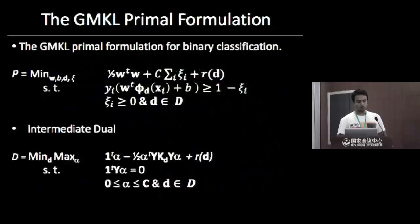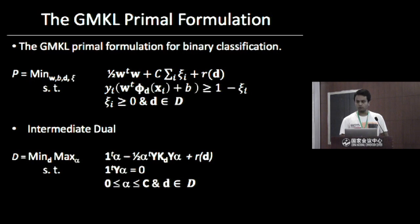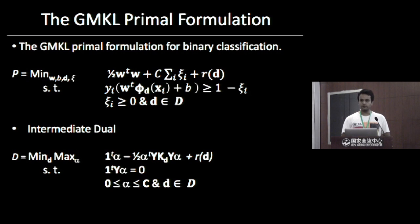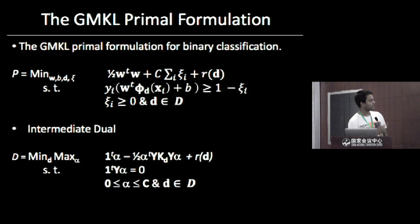The standard algorithm used to solve this is a wrapper-based algorithm with two loops. In the outer loop, we perform optimization over the kernel weights keeping the dual variables fixed. In the inner loop, we keep the kernel weights fixed, and once fixed, we can use any QP solver to find the optimum alpha star.